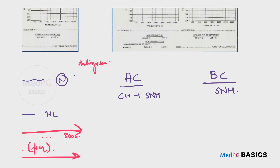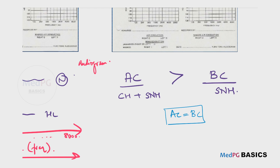In a pure tone audiogram, in a normal ear, we know that air conduction is more than bone conduction. But in a pure tone audiogram, we adjust it in such a way that in a normal patient, we get air conduction equal to bone conduction, so that both graphs of air conduction and bone conduction will be coinciding. Actually, in a functioning normal ear there is a gap with air conduction more than bone conduction, but when we set up the audiometric device, we preset it so that we get air conduction equal to bone conduction.